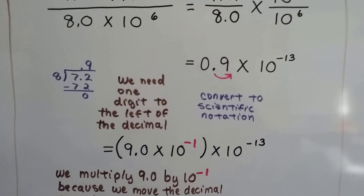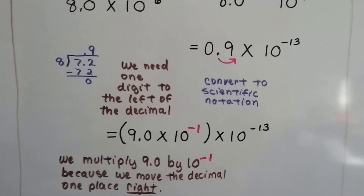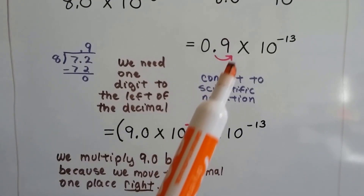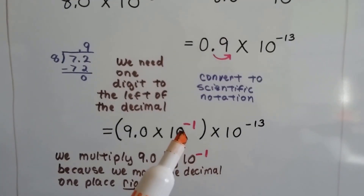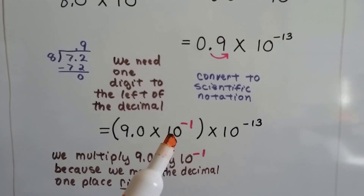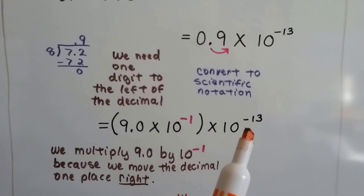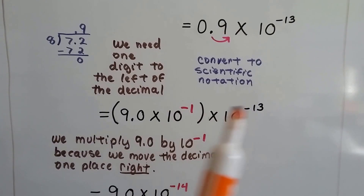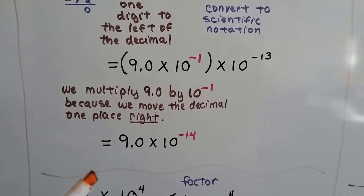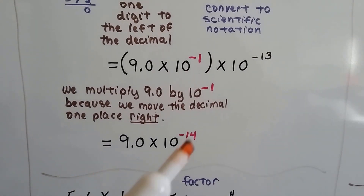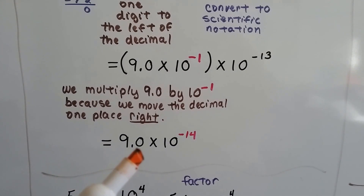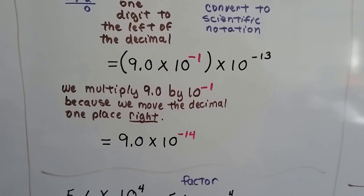We need to convert this to scientific notation, so we move the decimal place over by multiplying by 10 to the negative 1. We've got our negative 13 and we need to add these together: negative 1 plus negative 13 is negative 14, and now we've got 9.0 times 10 to the negative 14.